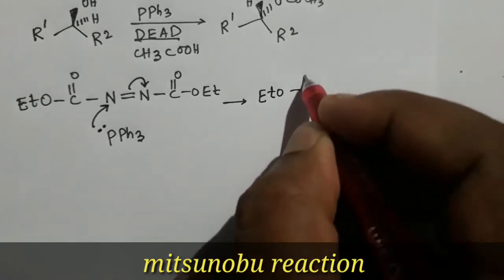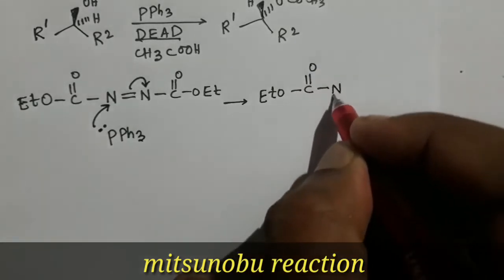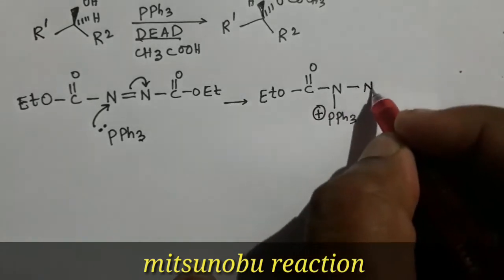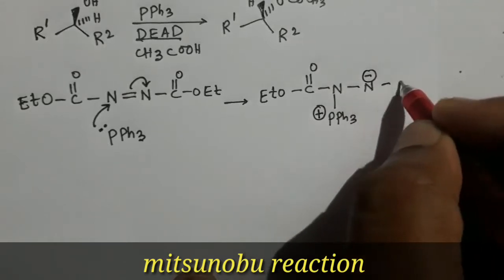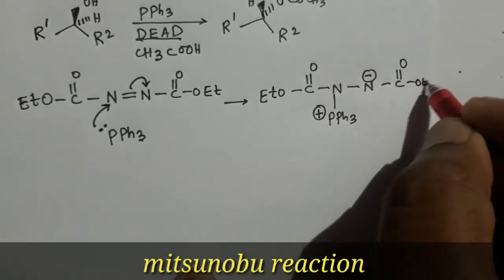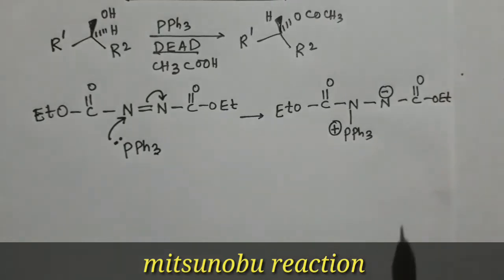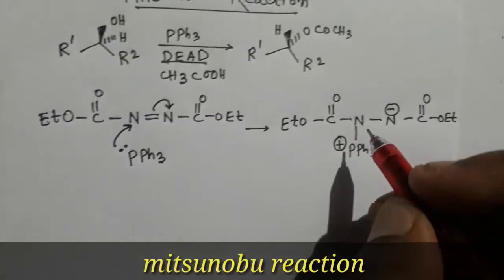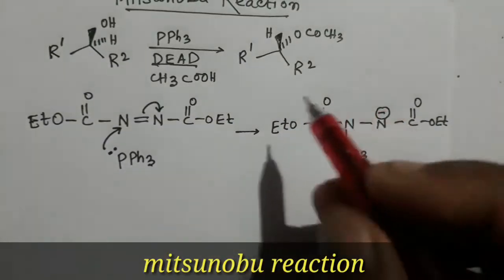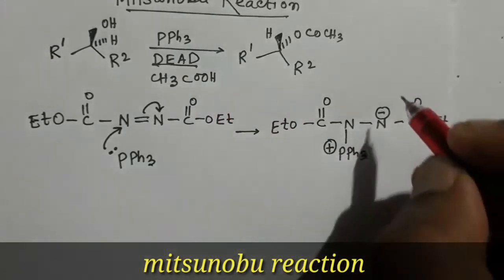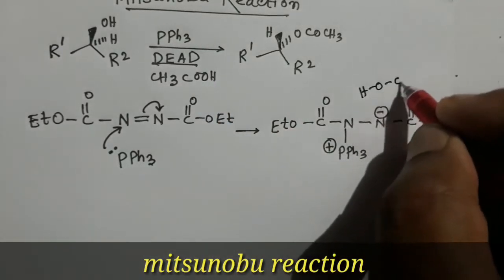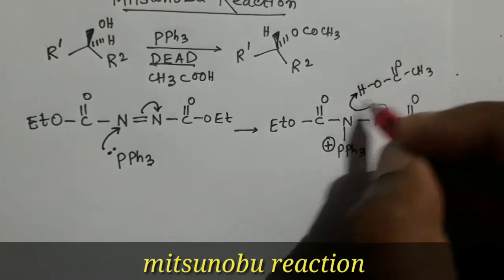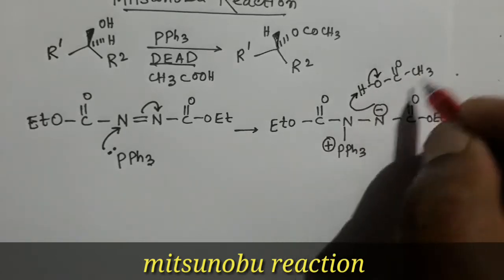The lone pair of the phosphorus atom will attack the nitrogen atom of diethylazodicarboxylate, forming triphenylphosphine with a positive charge and nitrogen with a negative charge, along with the C=O portion. This nitrogen negative charge will then deprotonate the acid molecule — the negative charge on nitrogen will accept the proton from acetic acid.